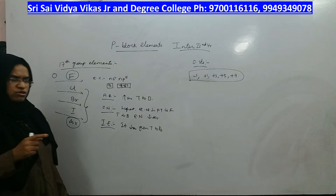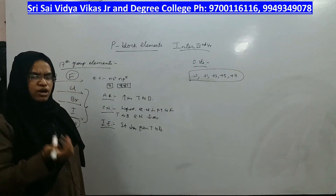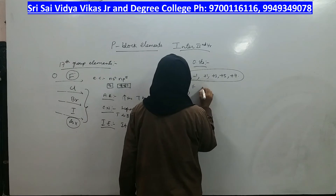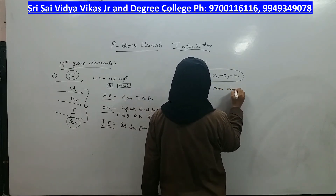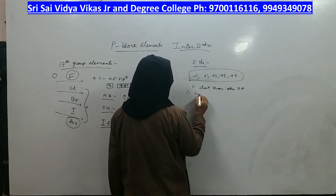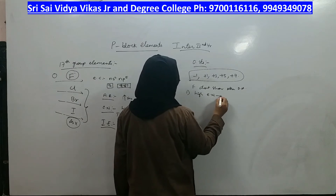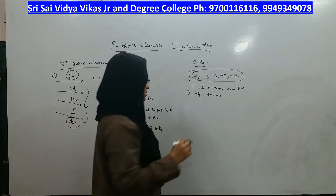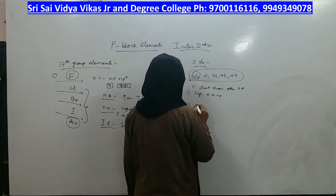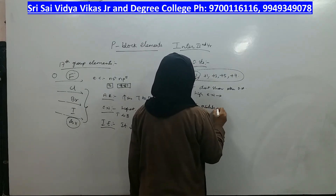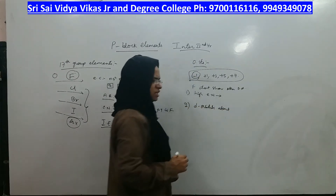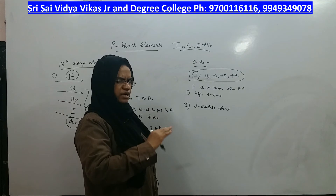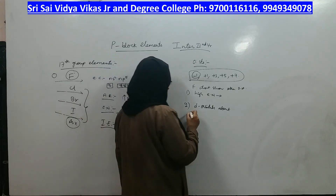Why can fluorine not show other oxidation states, while the other halogens can? One reason is fluorine's very high electronegativity — it will always gain electrons, so losing electrons is not possible. Another reason is that d-orbitals are absent in fluorine. The d-orbitals present in chlorine, bromine and iodine allow octet expansion, which is not possible in fluorine.